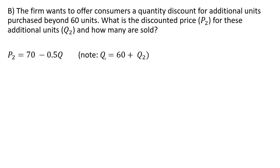We're going to note here that Q, the total quantity of output, is going to be 60. That's the value we solved for in part A, plus some additional units that we're going to sell at a discount, and that's Q subscript 2.